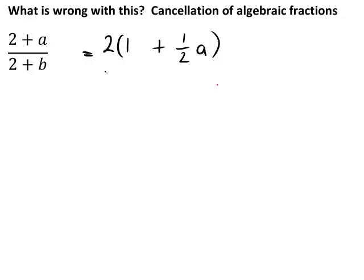And similarly on the denominator, taking 2 out as a common factor, that leaves us with 2 is 2 times 1. But to get b, by taking 2 out as a common factor, b must be 2 times (1/2)b.